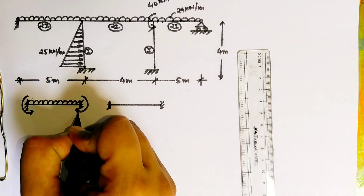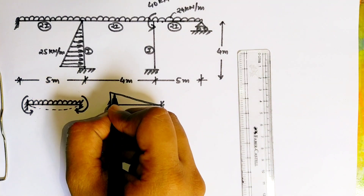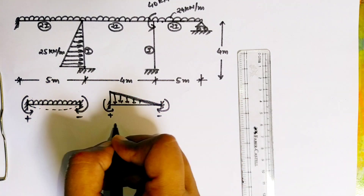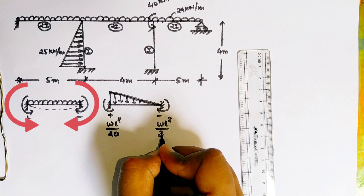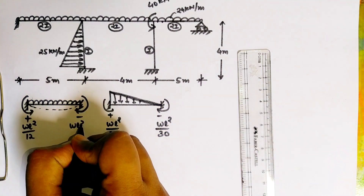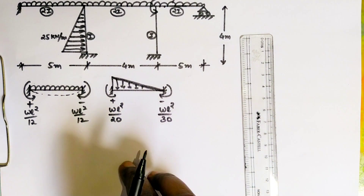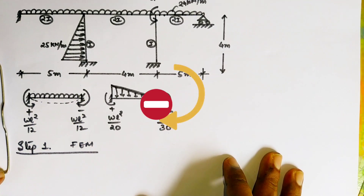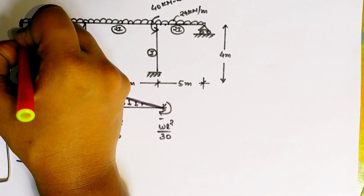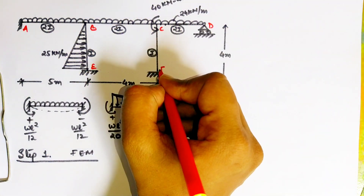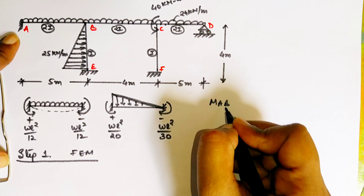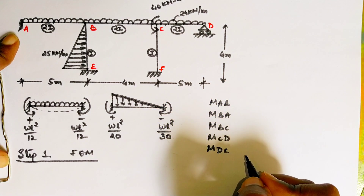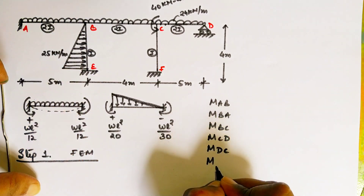In this question, step one is finding the fixed end moments. You can see there are two kinds of loading: one is UDL and one is triangular loading. The formula we are using takes clockwise as negative and anti-clockwise as positive — these are the sign conventions. The joint names are A, B, C, D, and now we are going to find all the fixed end moments.